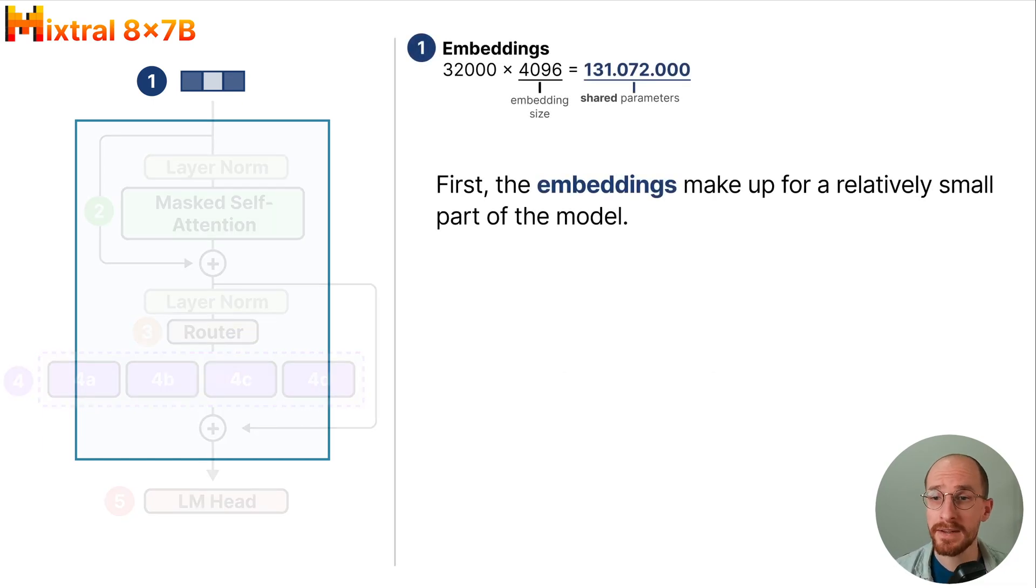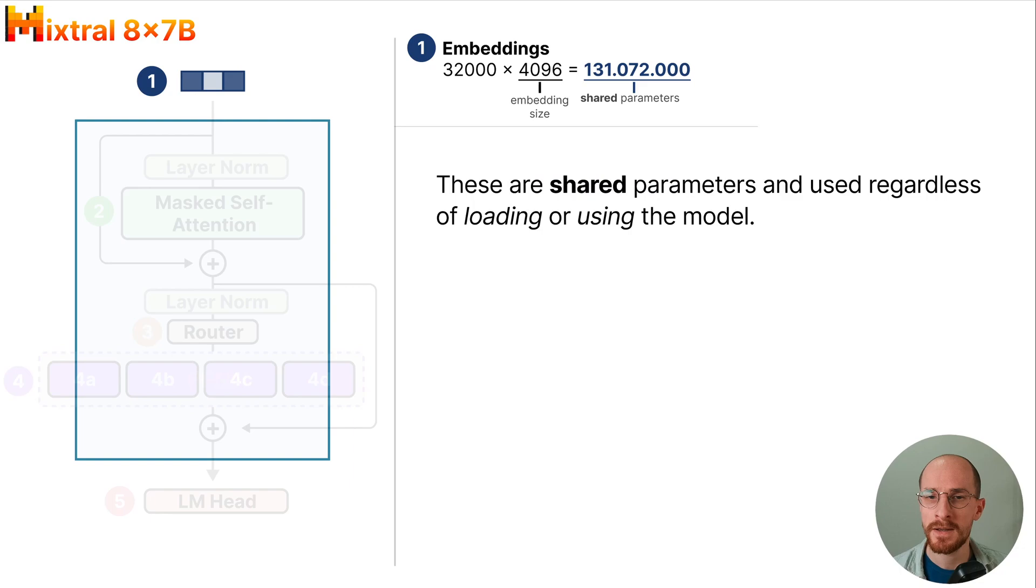First the embeddings make up for a relatively small part of the model with 131 million parameters. These are shared parameters and are used regardless of whether we load or use the model.